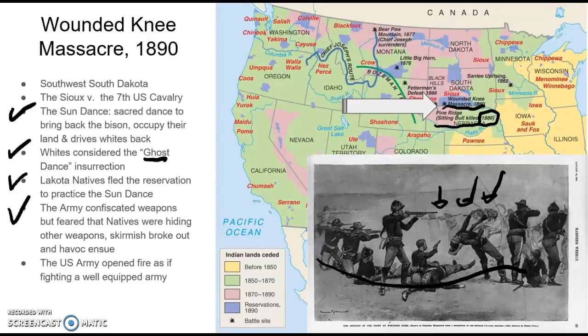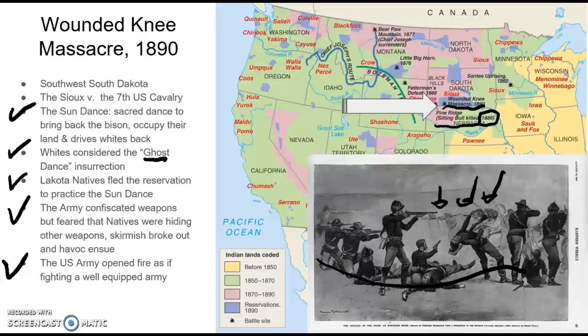The U.S. Army indiscriminately fired upon unarmed men. They fired upon women who, instead of carrying weapons, were carrying their children. They opened fire with cannons on the elderly, as if fighting a well-equipped army — it was completely the opposite. The Native Americans were not shooting at the army. When the smoke cleared, snow descended and over 200 Native Americans lay dead in the frozen ground. Wounded Knee marked the last battle of the Indian Wars. After Wounded Knee, most Native Americans were placed in reservations, their land confiscated and their culture nearly torn apart.